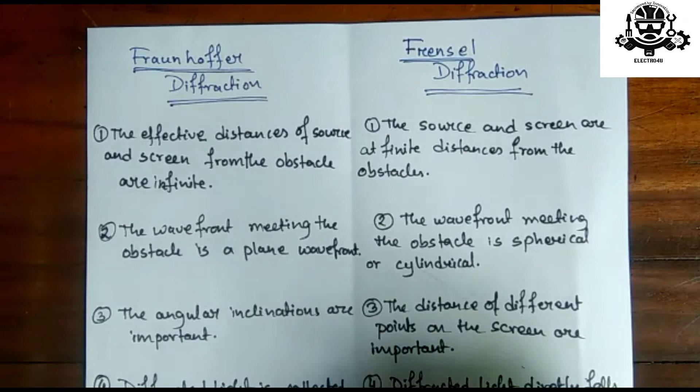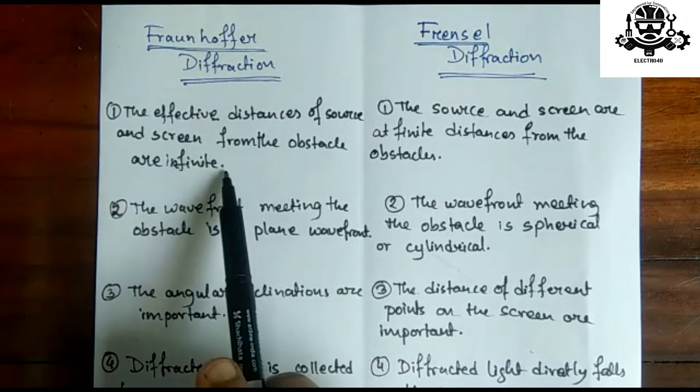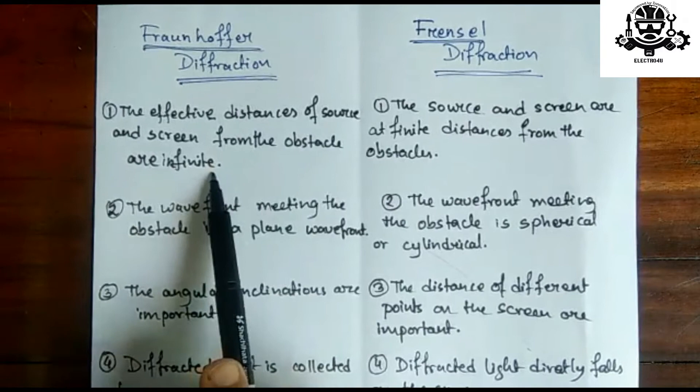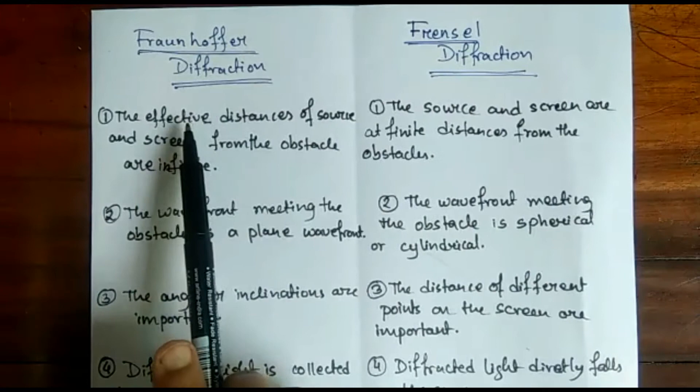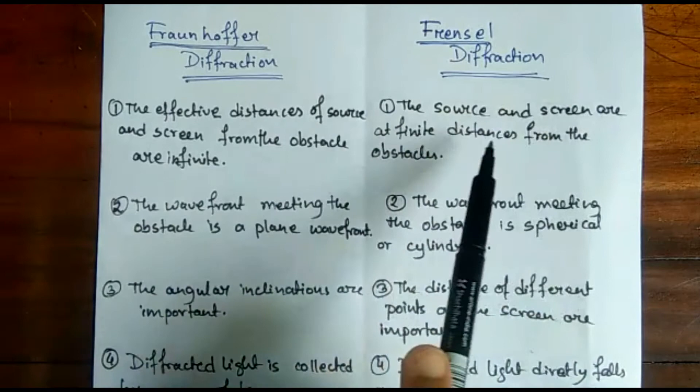According to the first point, as I have said in the previous video, Fraunhofer diffraction's main character is that the distance from the obstacle should be infinite, and for Fresnel this should be finite. As you can see written here, the effective distances of source and screen from the obstacle are infinite for Fraunhofer, and for Fresnel the source and screen are at finite distances from the obstacle.